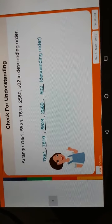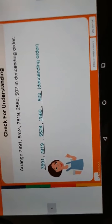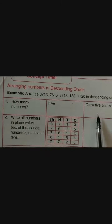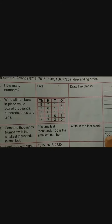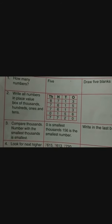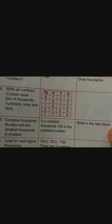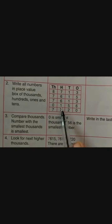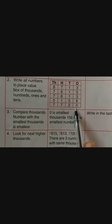Now we will start worksheet number 20. In this worksheet, descending order is there — we have to arrange the numbers in descending order. First, find how many numbers there are: 1, 2, 3, 4, 5 — there are 5 numbers, so draw 5 blanks. Then write the numbers in the place value box with thousands, hundreds, tens and ones: 8730, 7615, 7613, 156, 7720.